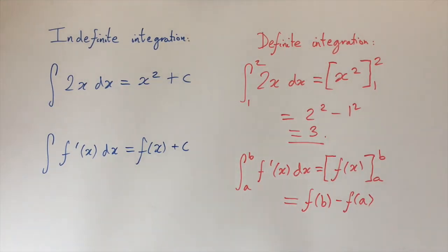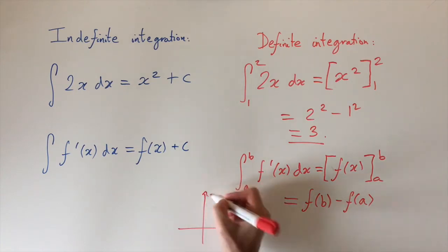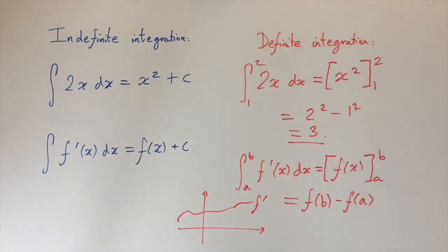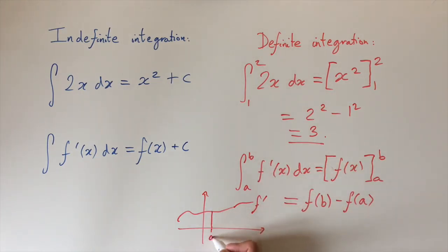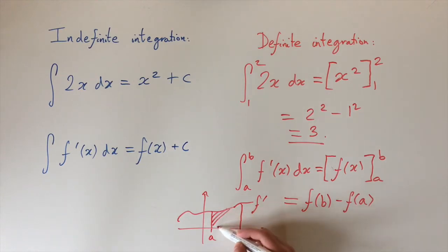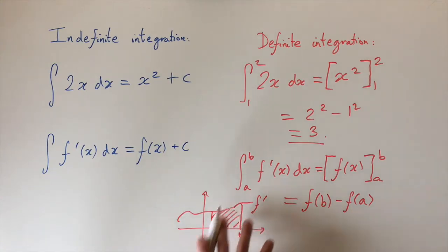We always get a number from definite integration and always get a function from indefinite integration. The last connection to make is that definite integration actually corresponds to something geometrically. If you sketch a general function — call it f′ — and integrate it between limits a and b, definite integration corresponds to calculating the area under this function between the curve and the x-axis. So this has a geometric interpretation.